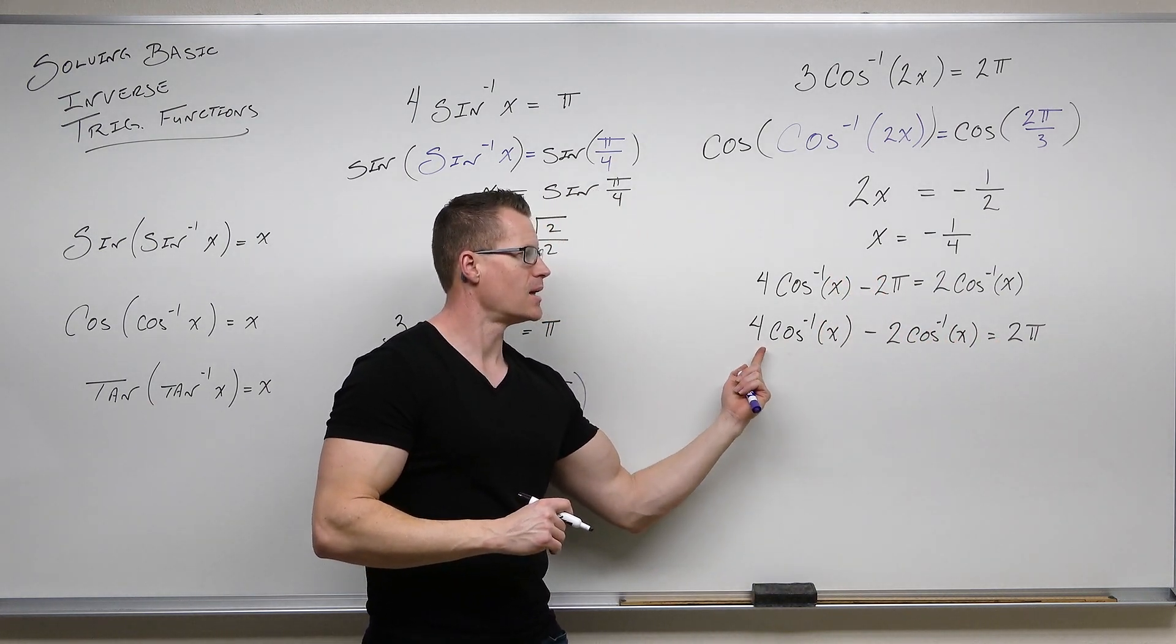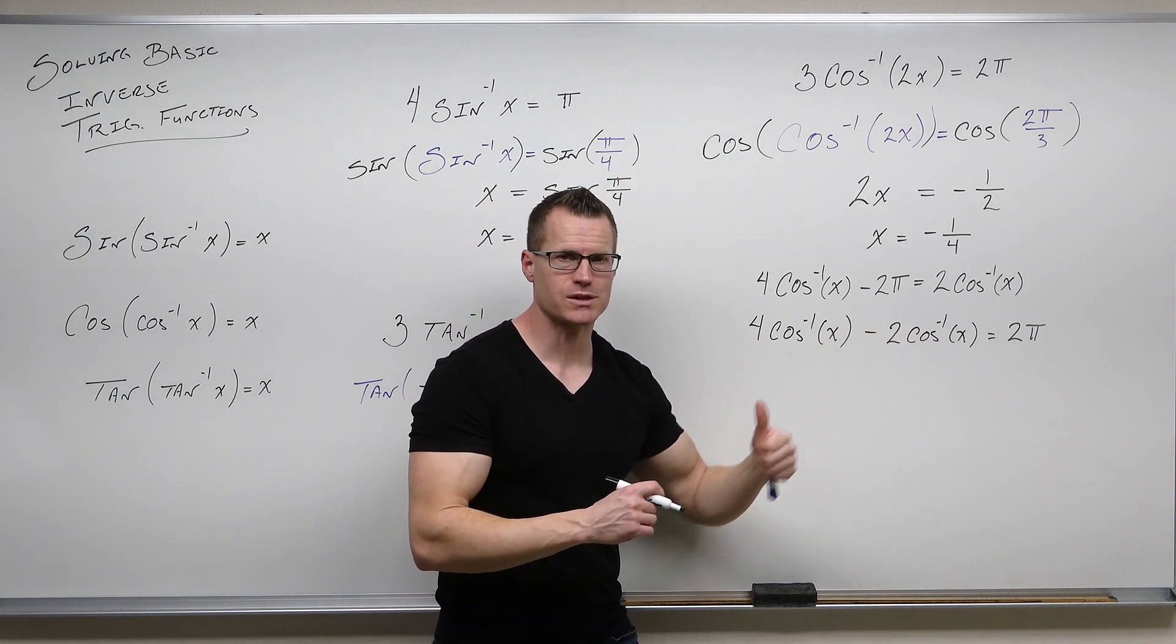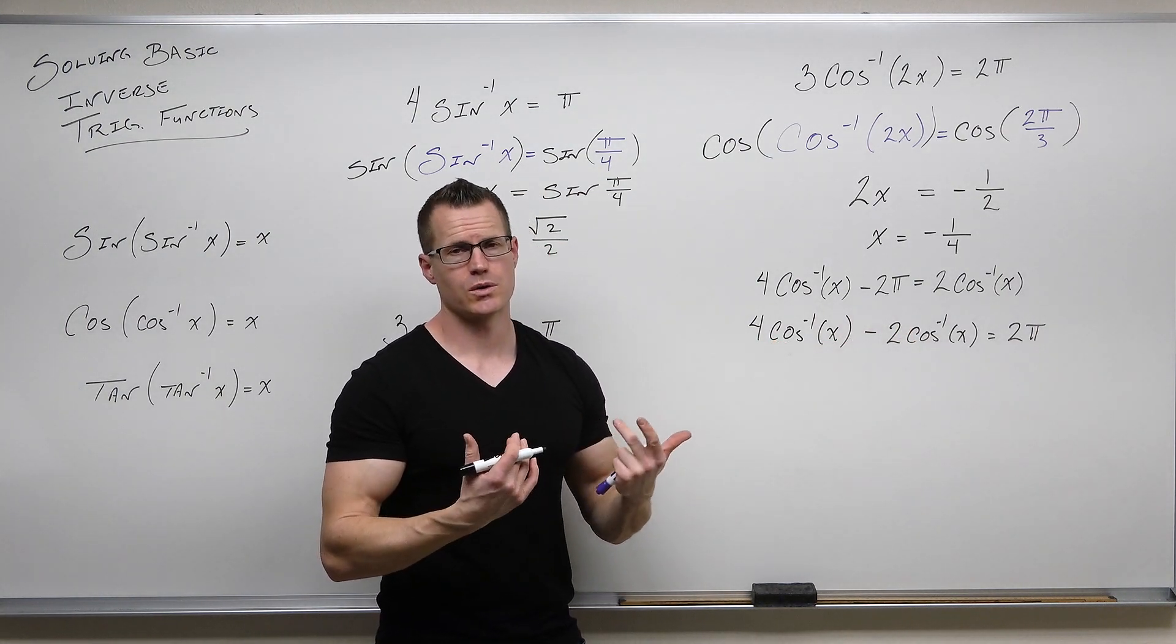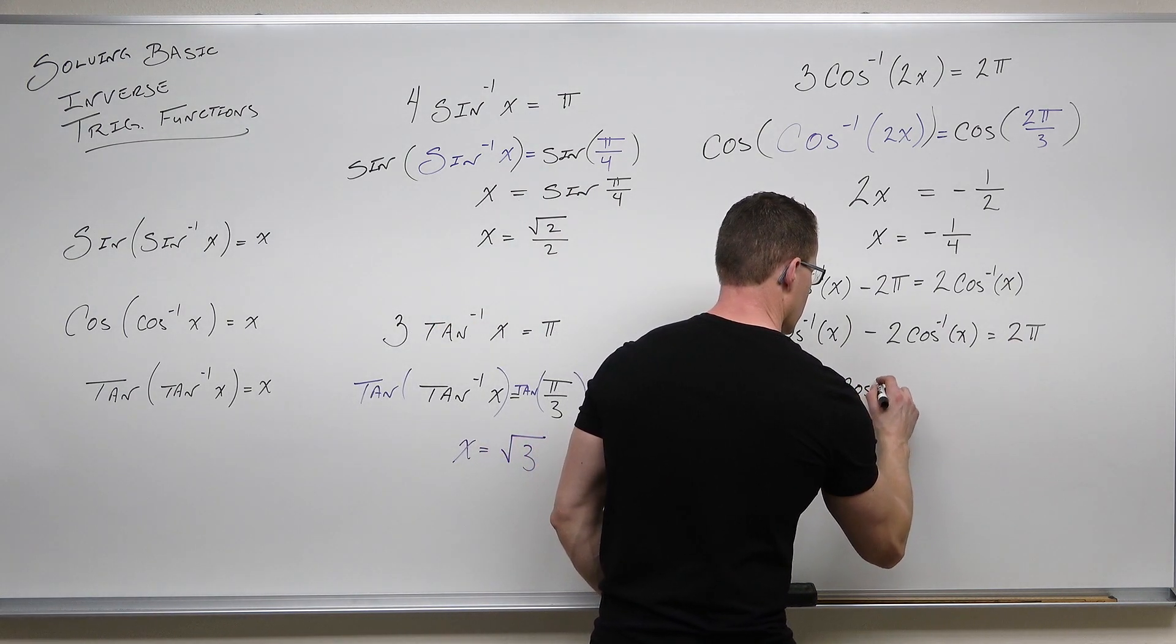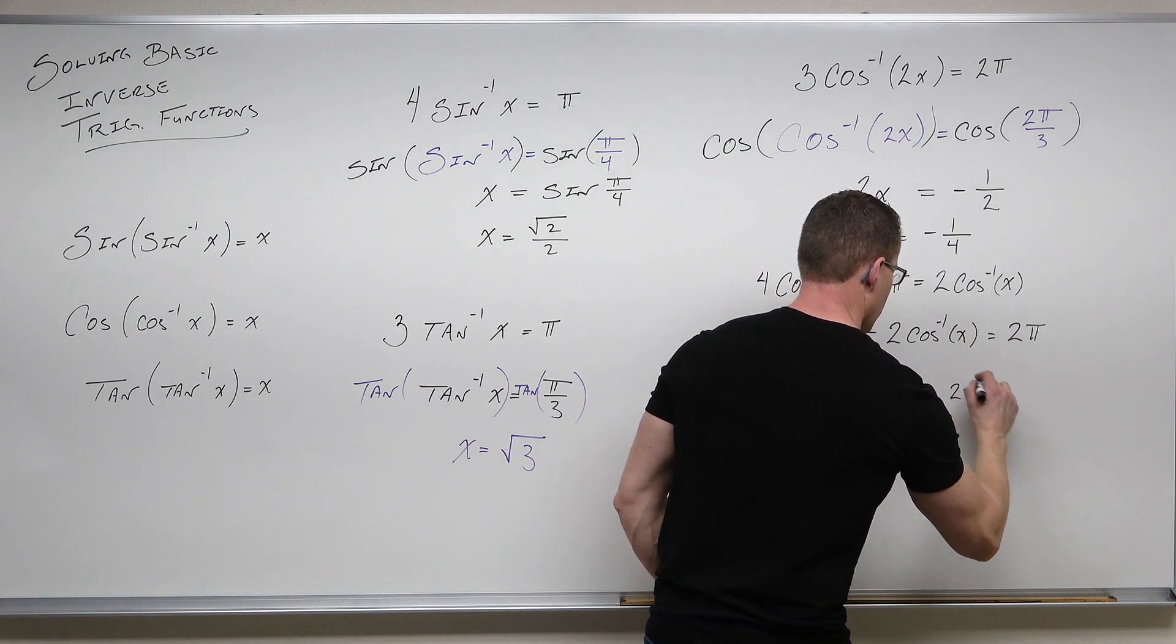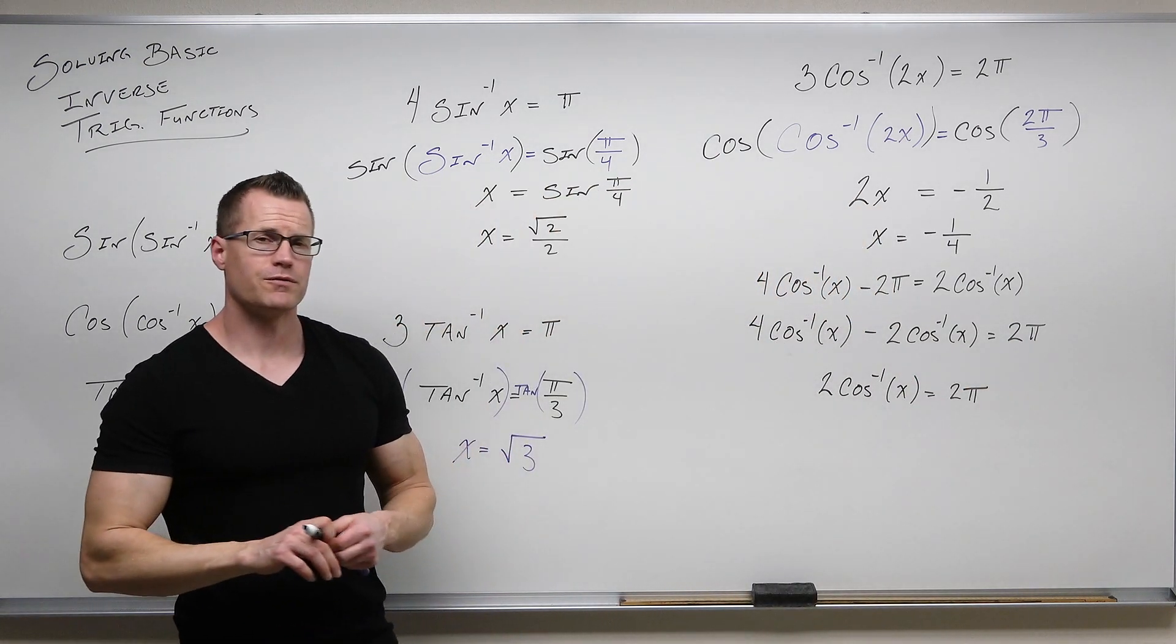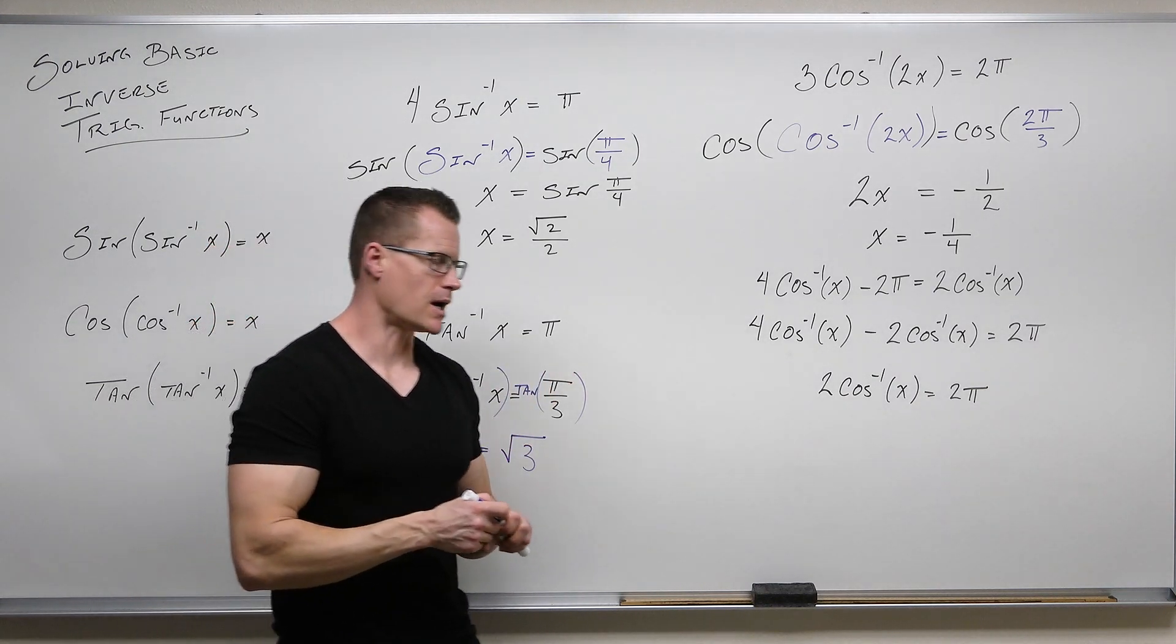So we've subtracted 2cos⁻¹(x) on both sides. We've added 2π to both sides. These are actually combinable. So if we have four of something minus two of something, altogether you have 2cos⁻¹(x). Then we're going to divide both sides by two. So 2π divided by 2 is just π.